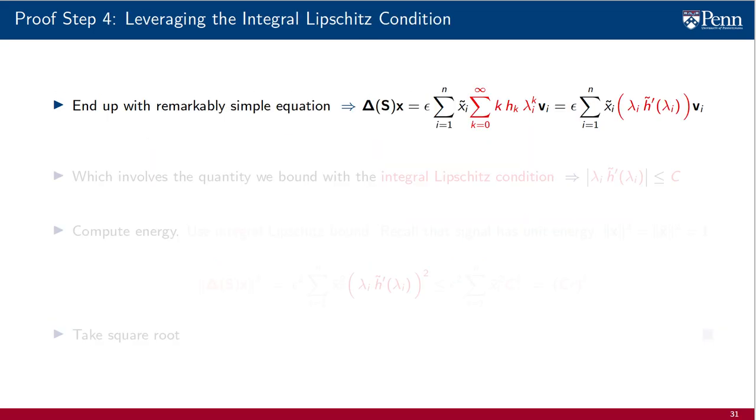The proof is almost done. We just need a fourth and final step where we use the integral Lipschitz condition to bound the product of λᵢ with the derivative of the filter's response. To do so, rewrite the expression we have just derived, which is remarkably simple for such a complicated analysis, by the way.